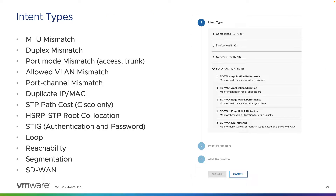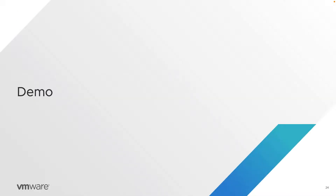Here's a sample of the intent types available within vRealize Network Insight. There's a long list covering everything from MTU mismatch, duplex mismatch, and loop detection to reachability and segmentation. There are also SD-WAN intents you can define against your VMware SD-WAN infrastructure, as well as STIG compliance, device health, network health, and many more. Next, we'll move into a demo of the network assurance and verification feature set on the network map and intents.